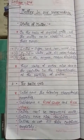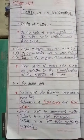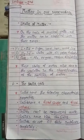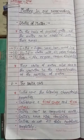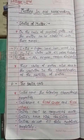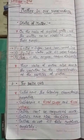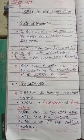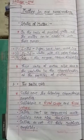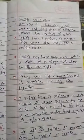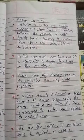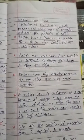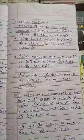Solids cannot be compressed much because the particles of a solid are very closely packed, so we cannot compress them too much. Solids have high density due to their closely packed particles. Solids do not fill the container completely and solids cannot flow.